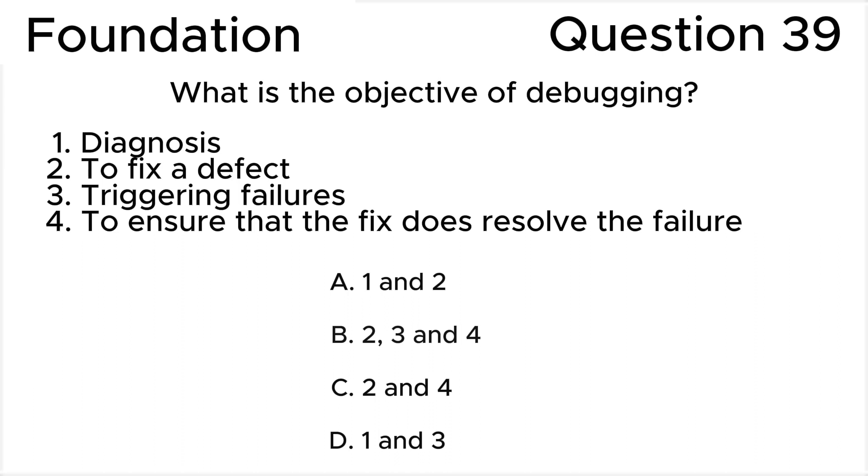ISTQB Foundation Level question 39: What is the objective of debugging? 1. Diagnosis, 2. To fix a defect, 3. Triggering failures, 4. To ensure that the fix does resolve the failure. Answers: A) 1 and 2, B) 2, 3 and 4,